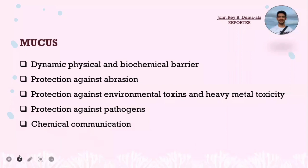External mucus is the main surface of exchange between fish and their surrounding environment and thus plays a key role in intra and interspecific chemical communication. Mucus acts as a dynamic physical and biochemical barrier, providing protection against abrasion, environmental toxins, heavy metal toxicity, pathogens, and chemical communication.